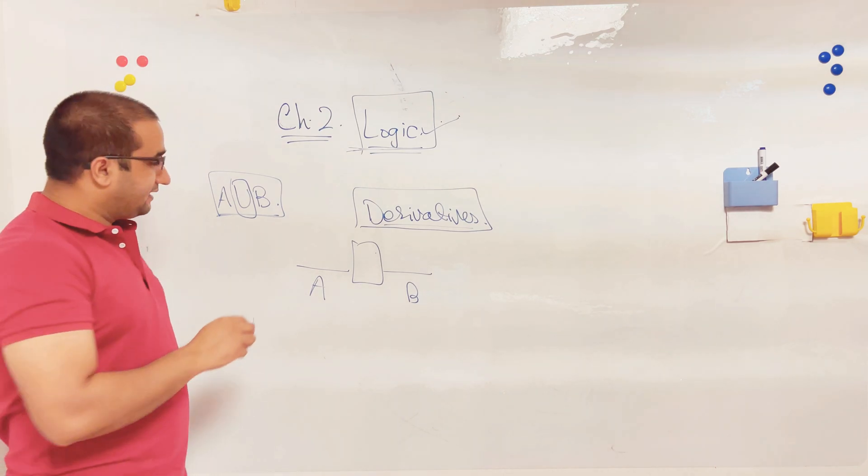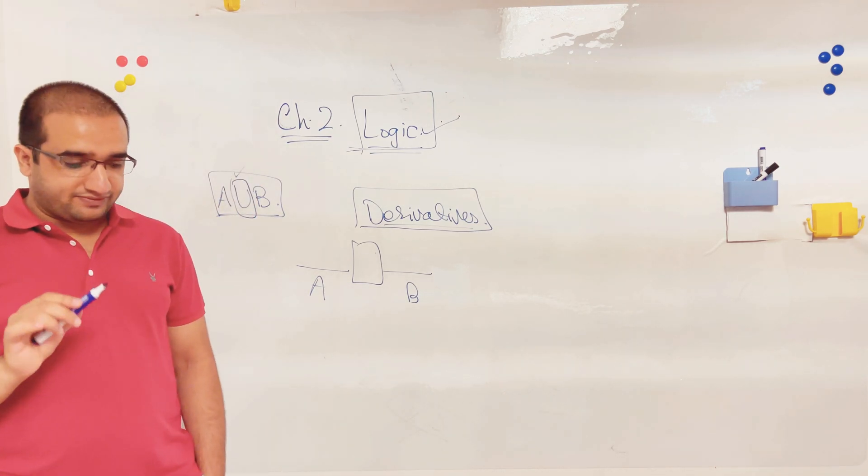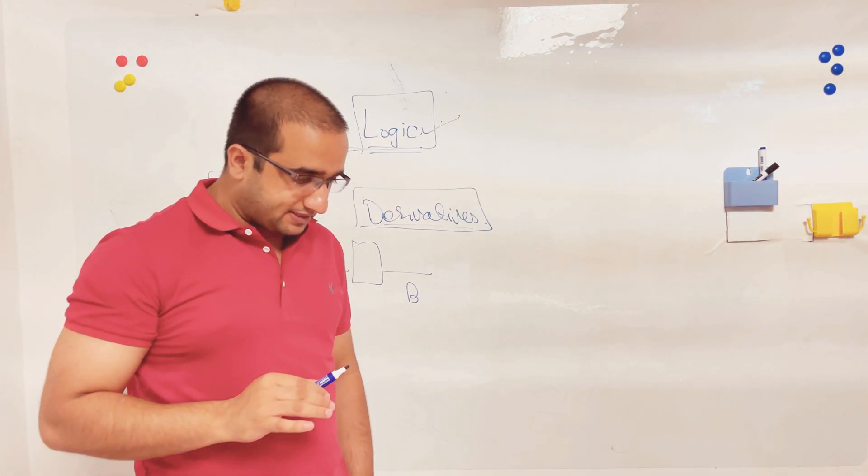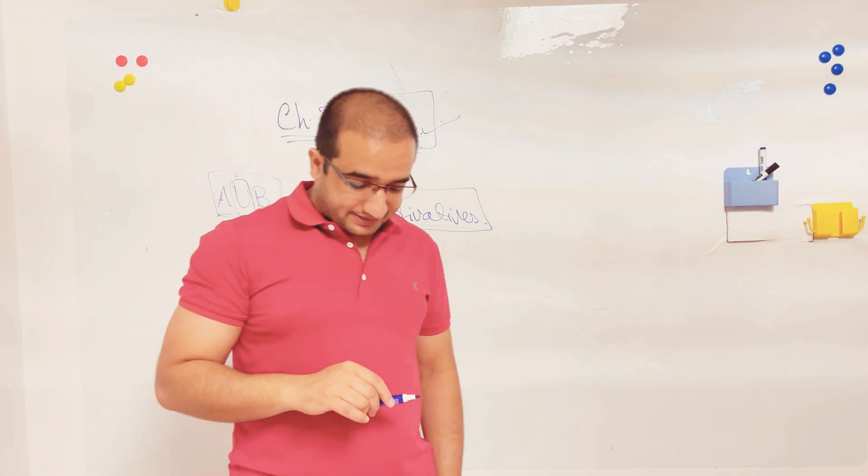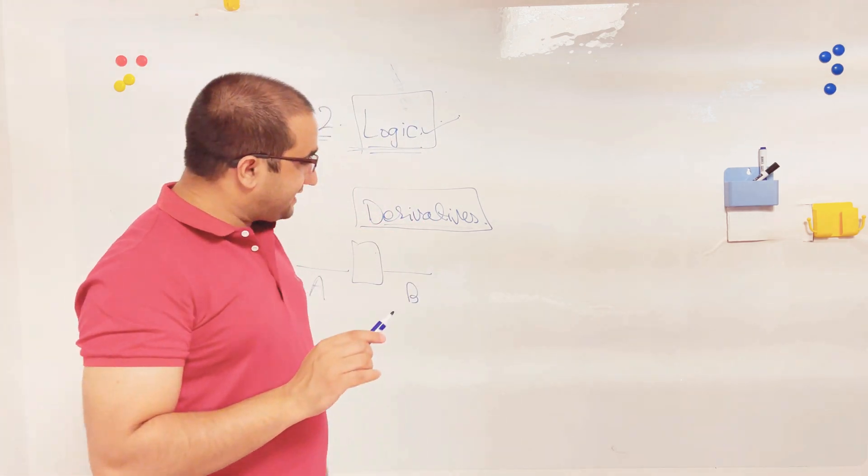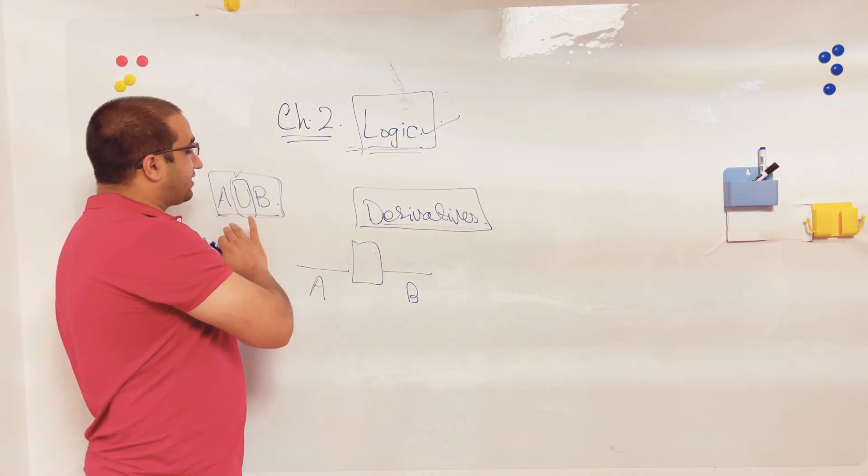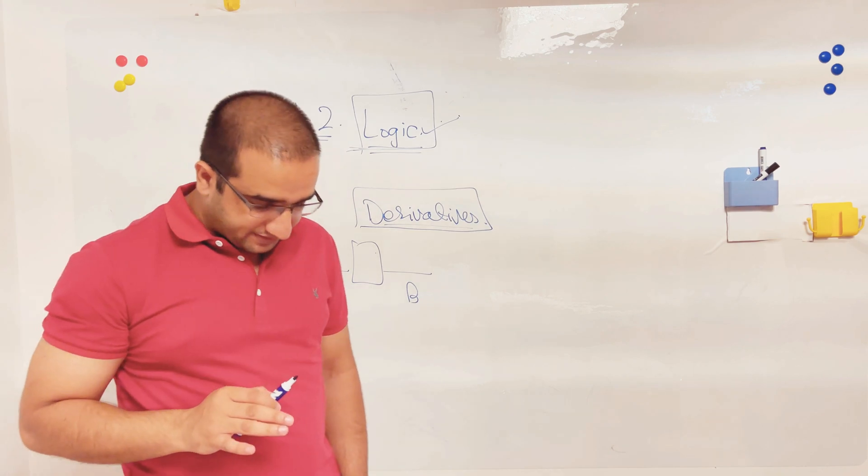For example, when you want to combine two sets, what do you do? You plug in a union symbol, a symbol of union in between the two sets, and it gives us an understanding that we can combine the two sets. These kinds of symbols for combining two different situations in mathematics were thought by these philosophers.